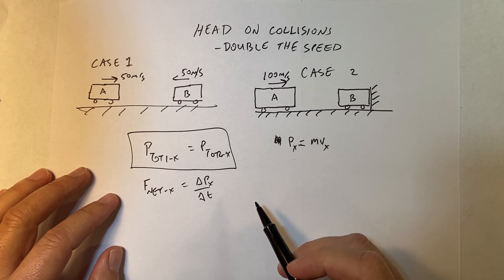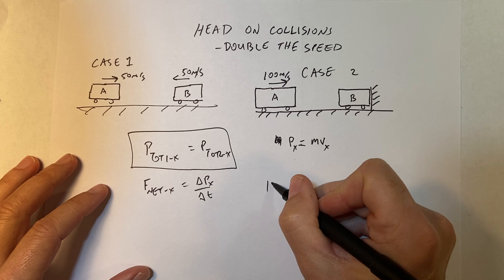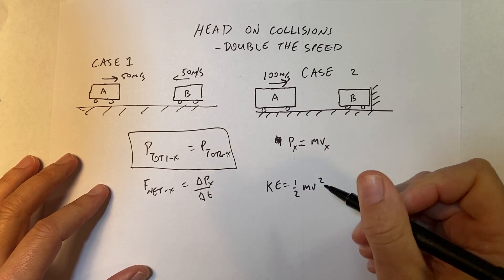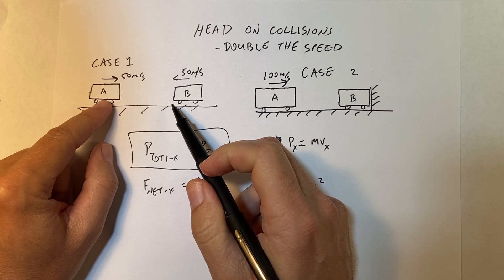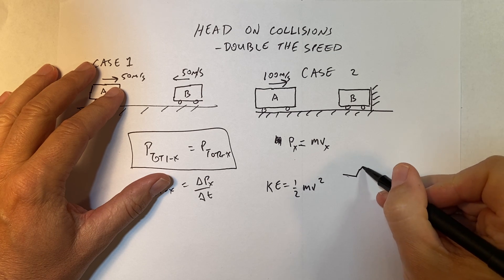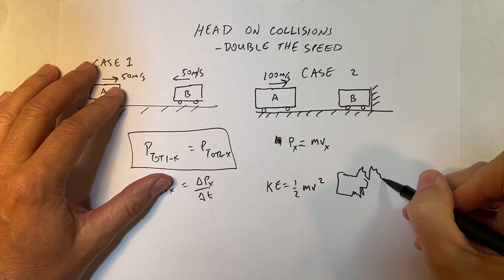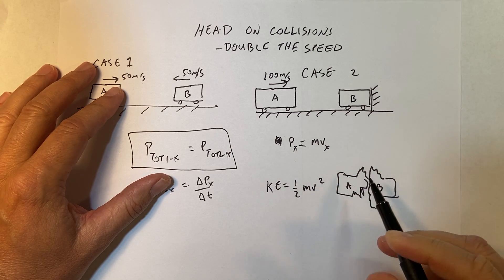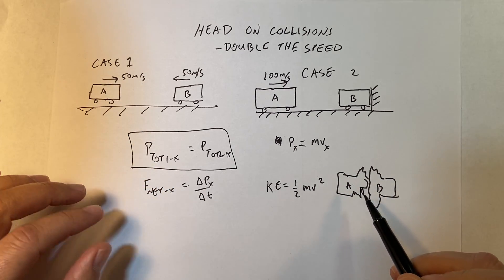Since car A pushes on car B with the same force that car B pushes on car A, they have equal and opposite forces, so they will have equal and opposite changes in momentum because the time is the same. So that's where this comes from.